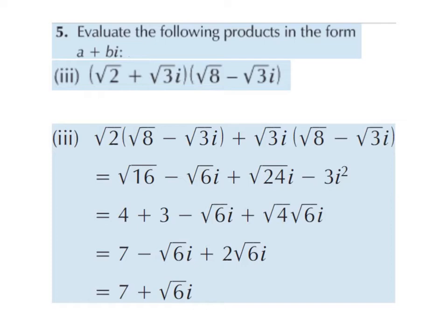I'm going to start by cracking open the first egg, or the first set of double brackets, bringing the root 2 down here and the plus 3 root i down here. Then I'm going to open up two sets of brackets and put the second egg into each of those. With binomial expansion, we crack open the first egg — the first part comes down here, the second part comes down here. We do not crack open the second egg; we bring it down here and down here.